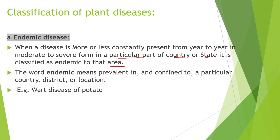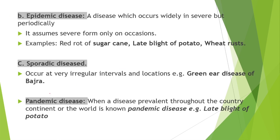For example, wart disease of potato is an endemic disease. Second is epidemic: a disease which occurs widely and severely but periodically, assuming severe form only on occasions. For example, red rot of sugarcane, late blight of potato, and wheat rust.